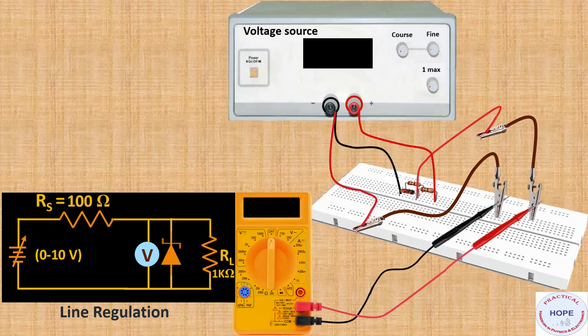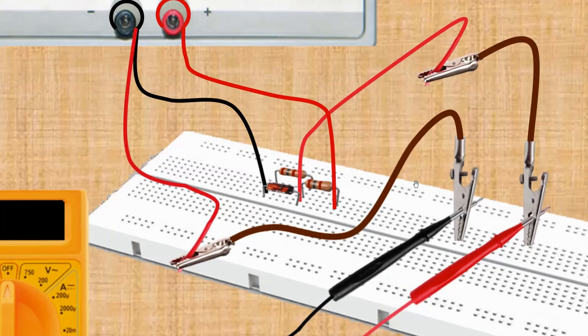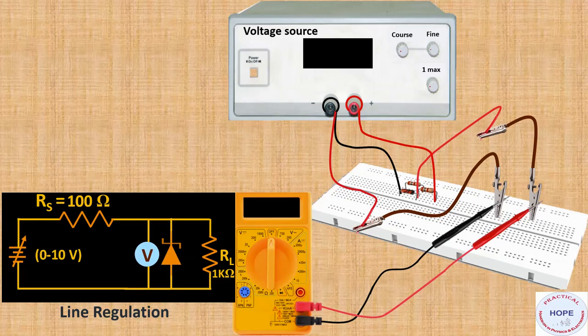Our circuit is now complete. The connections are verified — the circuit nodes are properly joined. Let's switch on the power.